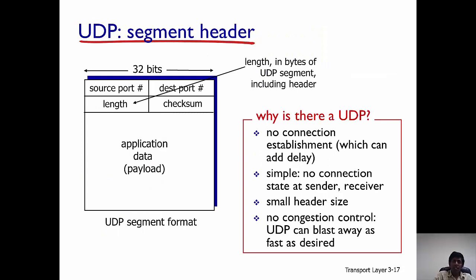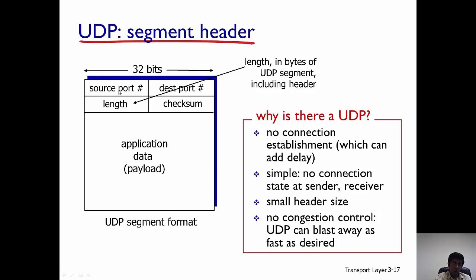Let's look at the UDP segment. The UDP segment has header information with four important fields: the source port, the destination port, the length, and the checksum. The source port is the port of the sender, the destination port is the port of the recipient, and the length is the length in bytes of the UDP segment including the header. The checksum field is there to detect errors in the UDP segment, which we will discuss in the next slide.